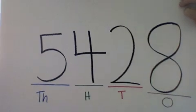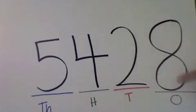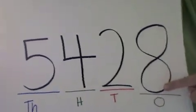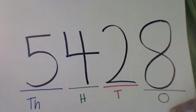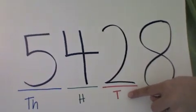You can see here that I've underlined each number with its place value. The 8 is in the ones column, which is what the O stands for. The 2 is in the tens column, which is what the T is.